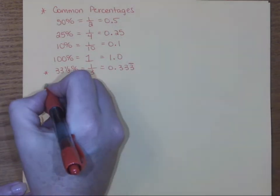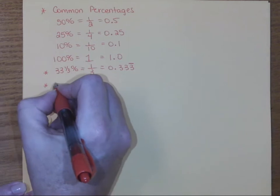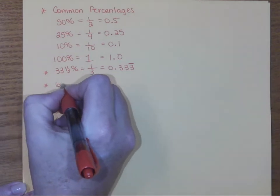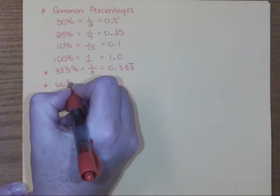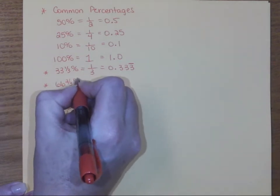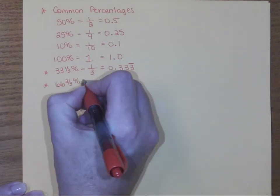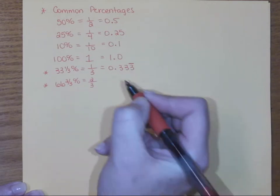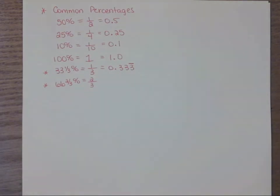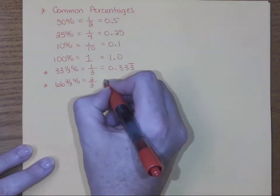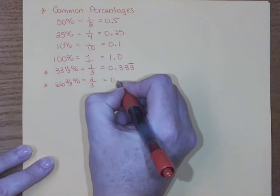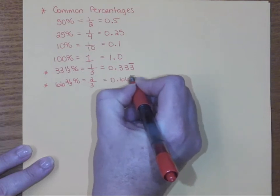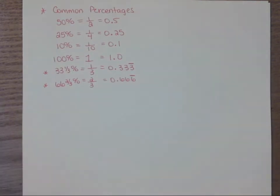Two thirds would be double this number — you would literally double the whole number portion and the fraction percentage. So 66 and two thirds percent literally represents two thirds, which would be 0.6 repeating. We put the bar over the six.